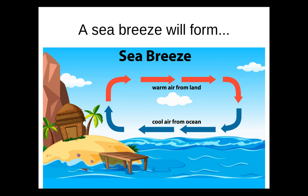The warm air over the land will rise throughout the day, causing low pressure on the surface. Over the water, high surface pressure will form because of the colder air. To compensate, the air will sink over the ocean. The wind will blow from the area of high pressure over the water to low pressure over the land, causing a sea breeze. The sea breeze strength will vary depending on the temperature difference between the land and the ocean.